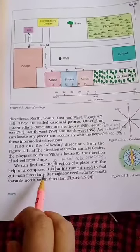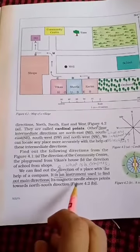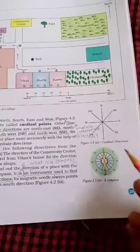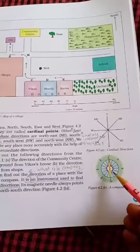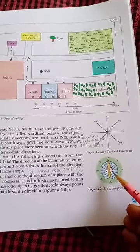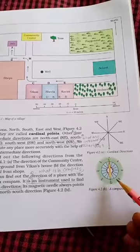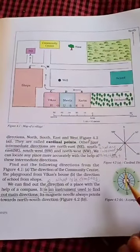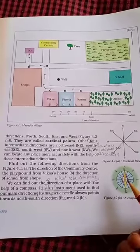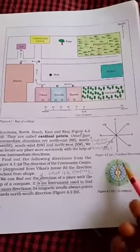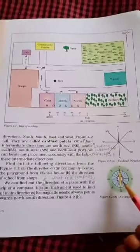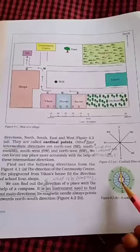Its magnetic needle always points toward the north-south direction. इस compass में एक magnetic needle होती है जो हमेशा north और south direction की ओर ही रहती है। मतलब आप इस compass को कहीं भी ले जाकर रखें, जहाँ आपको direction नहीं पता — यह magnetic needle हमेशा north-south direction में ही स्थिर रहेगी।